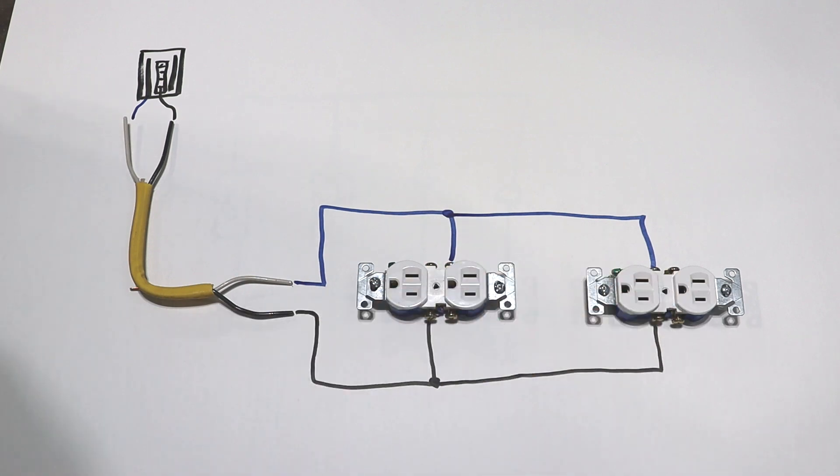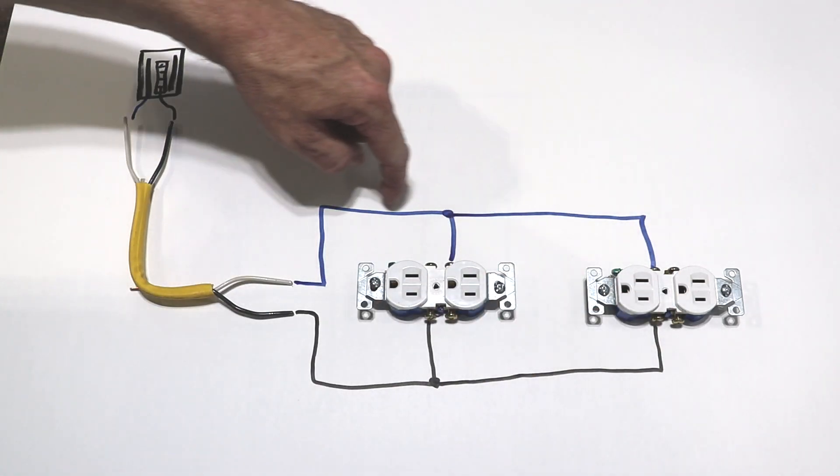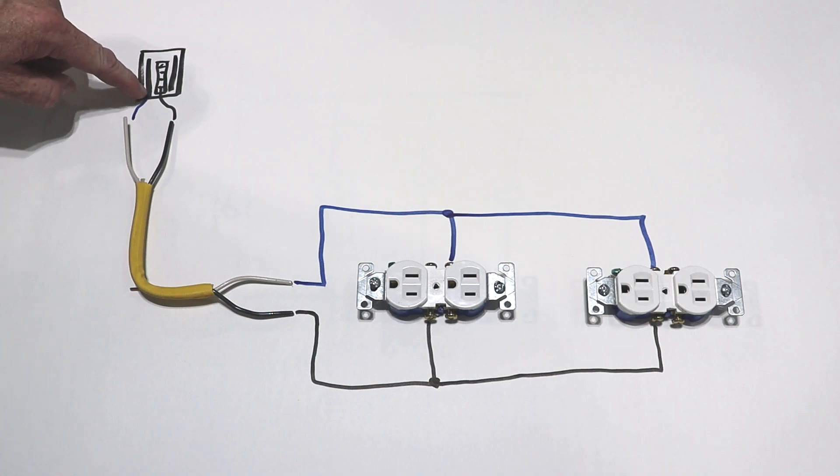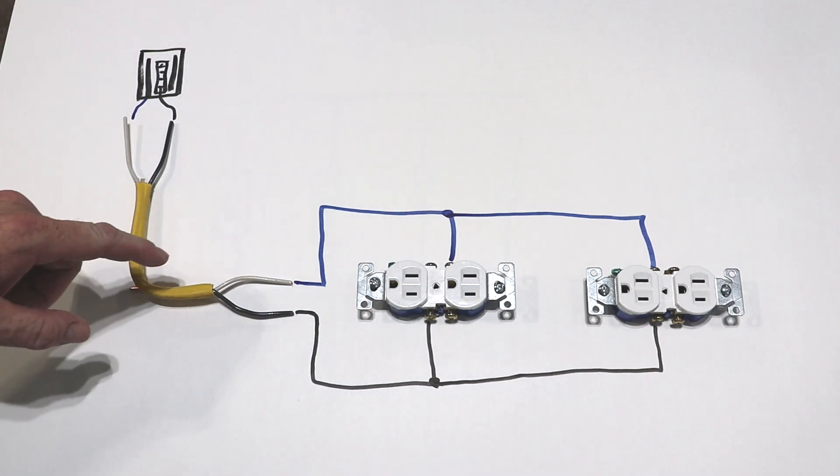If we plug something into these outlets, it completes the circuit, and the power runs back through the neutral wire, back to the bus bars, completing the circuit.